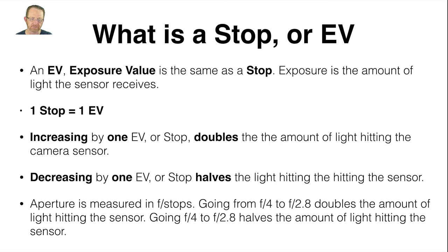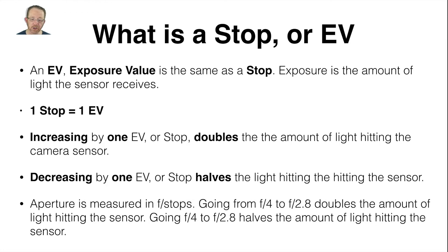What is a stop or an EV? An EV is an exposure value — it's the same as a stop. Exposure is the amount of light the sensor receives. One stop equals one EV. Old-school photographers talk about stops, but your modern digital camera will have EV mentioned in it somewhere, and when you come to do exposure bracketing, it will be done in EVs. Increasing by one EV or stop doubles the amount of light hitting the camera sensor. Decreasing by one EV or stop halves the light hitting the sensor. Aperture is measured in f-stops — going from f4 to f2.8, making the aperture wider, doubles the amount of light hitting the sensor, and going from f4 to f5.6 halves it.